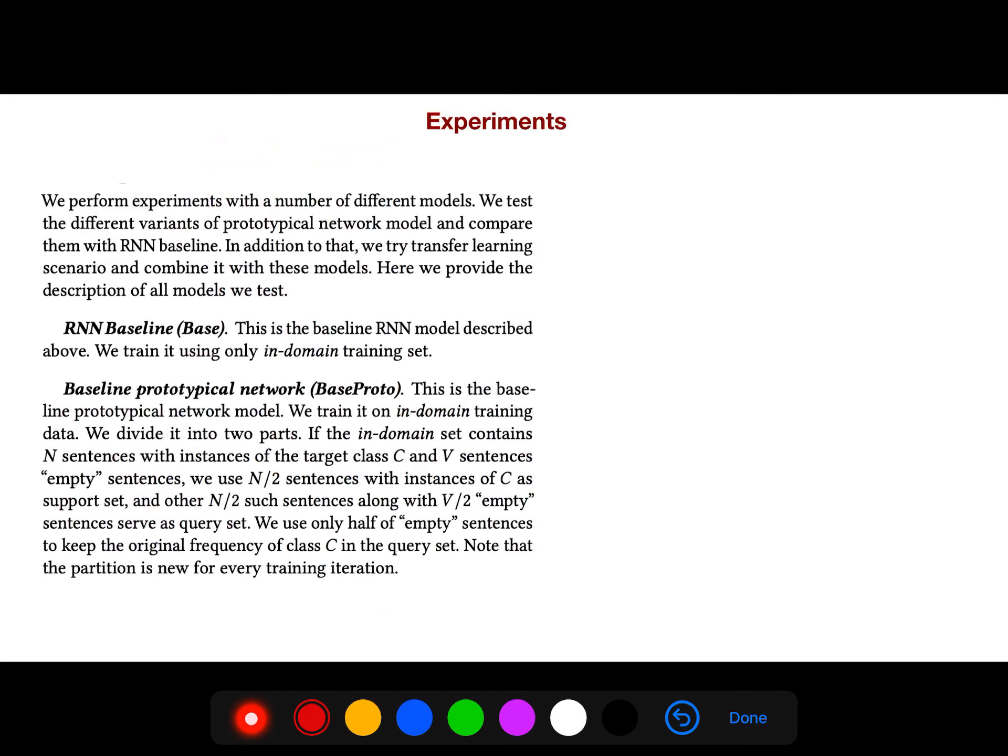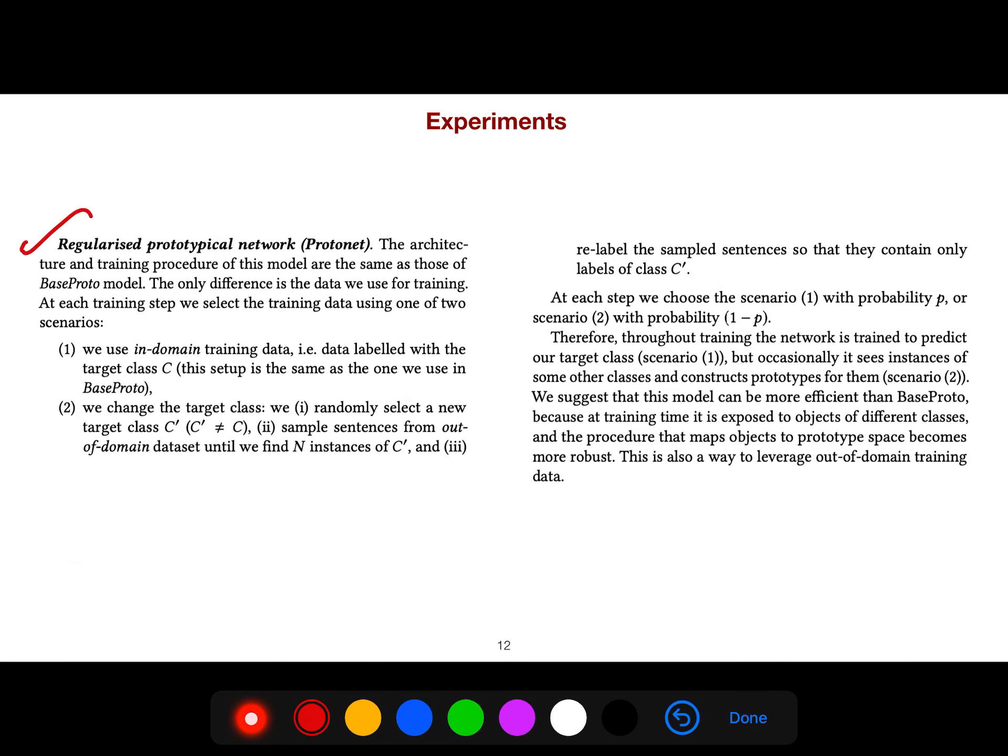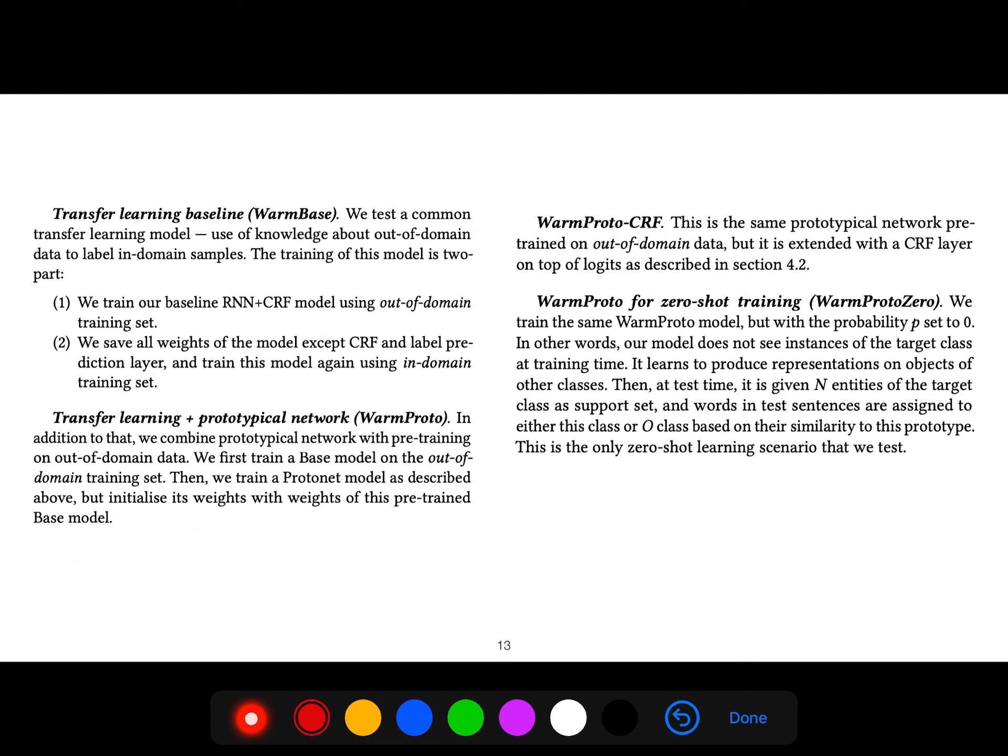They perform experiments with a number of different models: their baseline RNN, baseline prototypical networks with different configurations, regularized protonet, transfer learning baseline (testing a common transfer learning model using knowledge about out-of-domain to label in-domain samples), warm baseline, and warm proto where they use protonet as well, and the same thing for CRF.